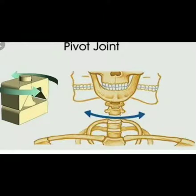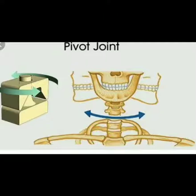The next joint is the pivot joint, which is another flexible joint. It is present between the first and second vertebrae of the spine, below the skull, and it helps us turn our head sideways. A pivot joint is also present between the bones of the forearm — the radius and ulna bones.